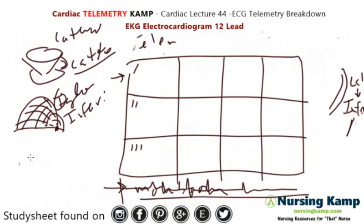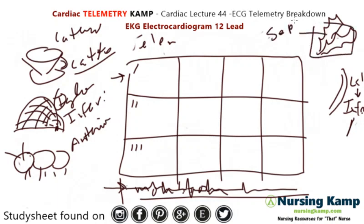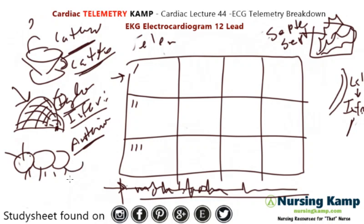Another symbol we need to know is ant — and ant would be anterior. And then another symbol we'll need to know is these leaves. I think of leaves in September, so that would be September and that would be septal. So we have: lateral coffee — latte; igloos for inferior; ants for anterior; and leaves for septal, for September.